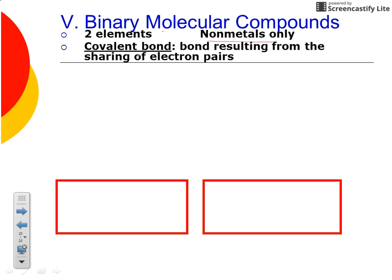Remember again, covalent bonds occur when the electrons are shared between non-metals — it's the bond resulting from the sharing of electron pairs.